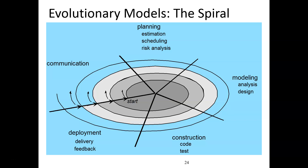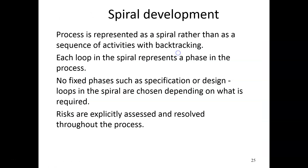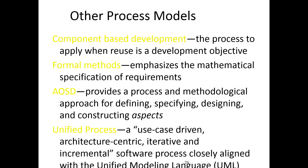The next model is the spiral model. It is structured like a spiral. First you plan — estimation, scheduling, and risk analysis. Then modeling: analysis and design. Then construction: coding and testing. Then deployment: delivery, feedback, and communication. The risk analysis means you identify risks at an early stage. The process represents a spiral rather than sequential activities like the waterfall. In each loop of the spiral you have a phase — there are no fixed phases. Risk is identified earlier and can be resolved throughout the process.